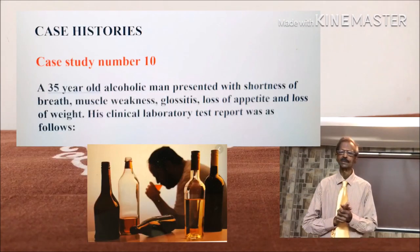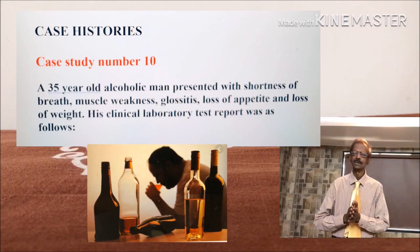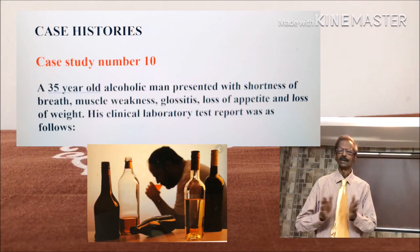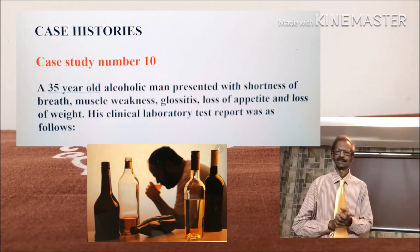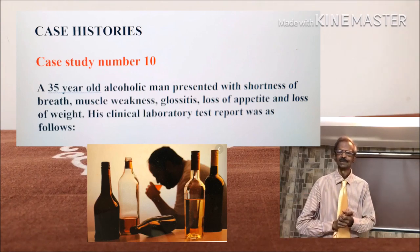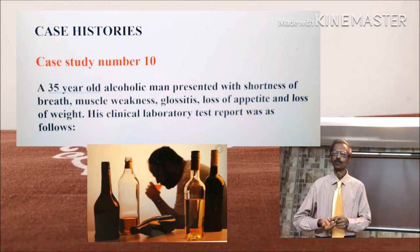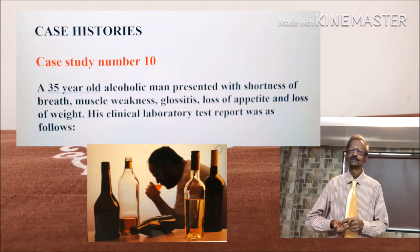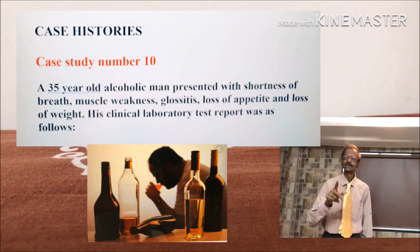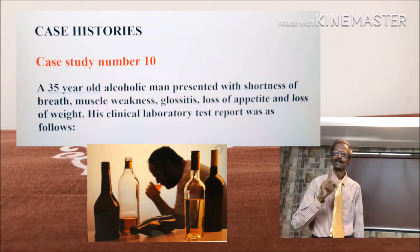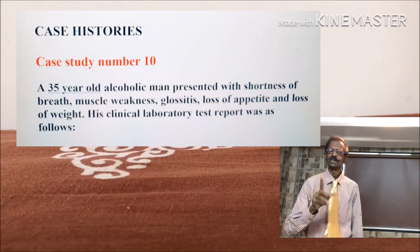A 35-year-old alcoholic male presented with shortness of breath, muscle weakness, glossitis (that means soreness of the tongue), loss of appetite, and loss of weight. This is his complete blood count report.